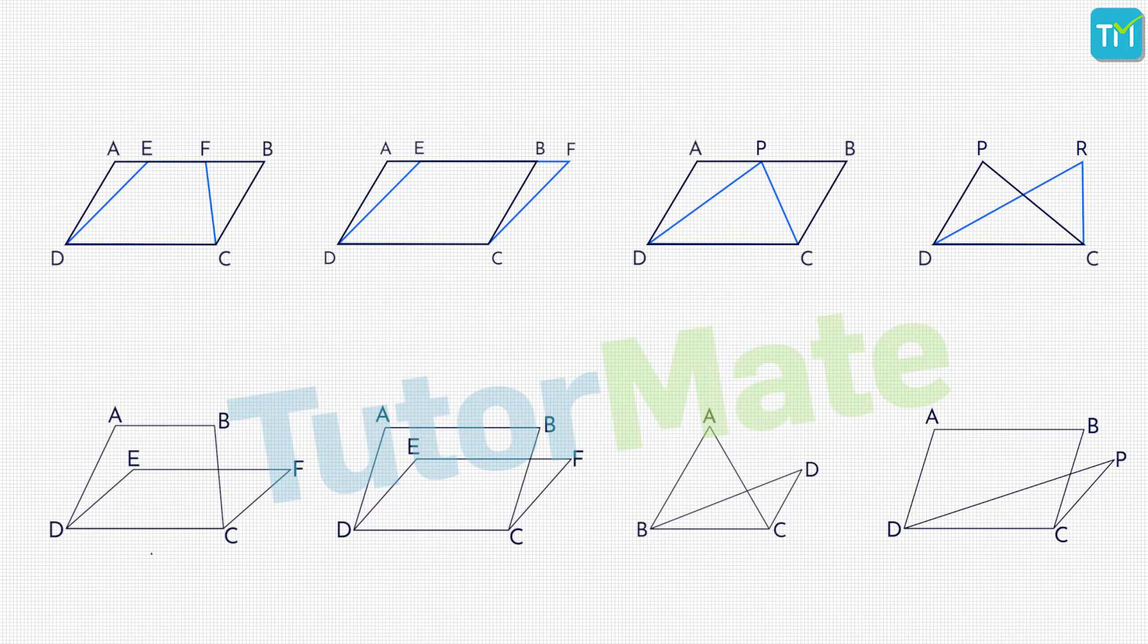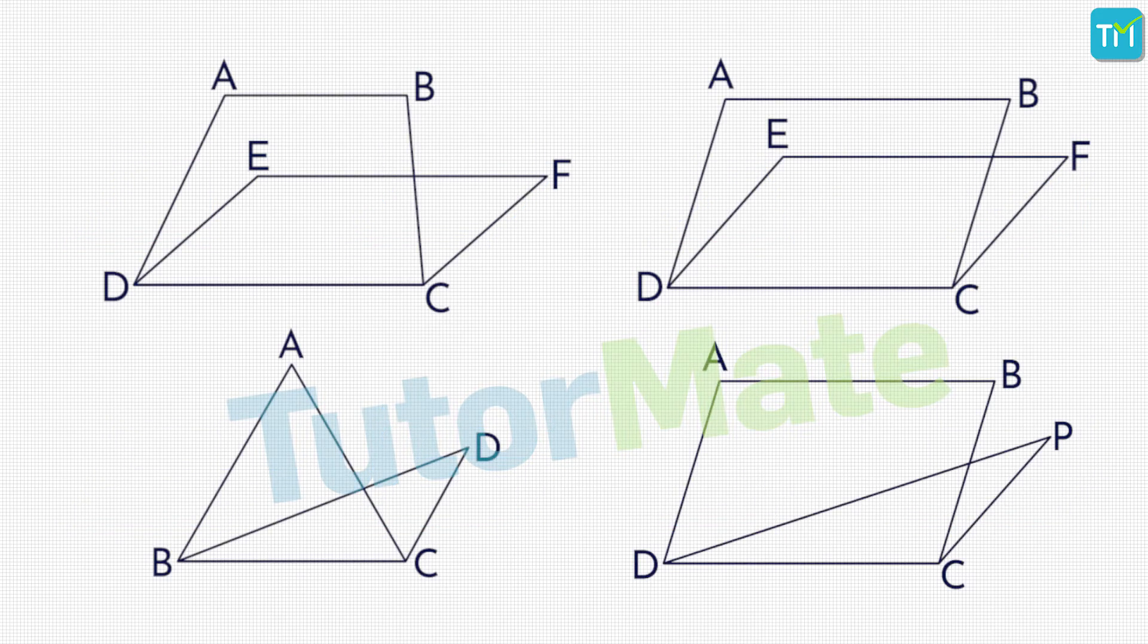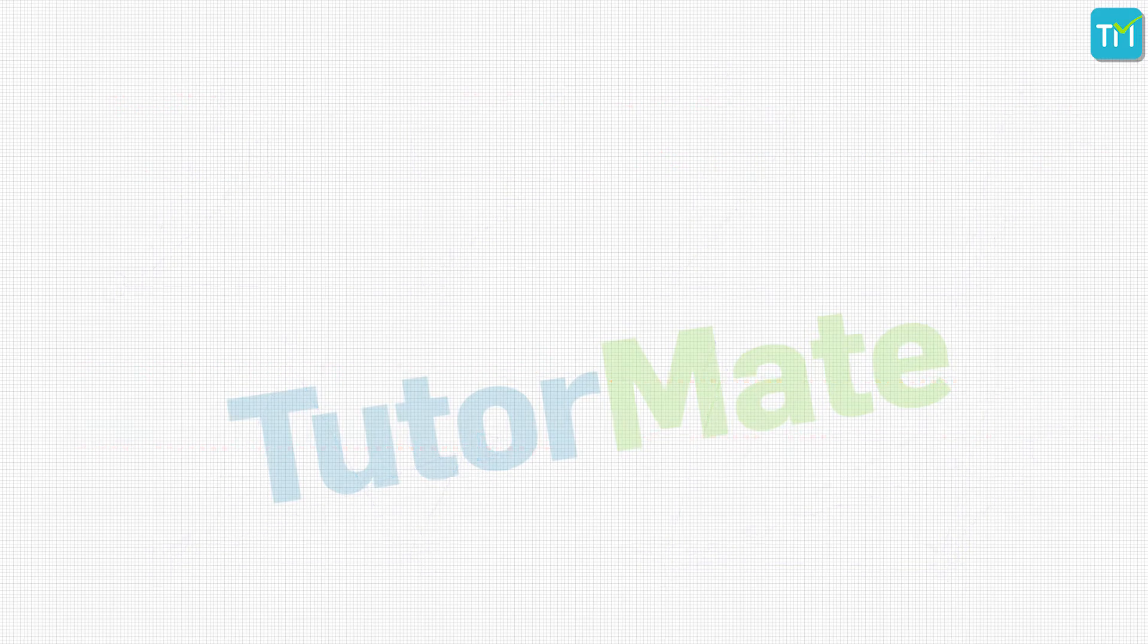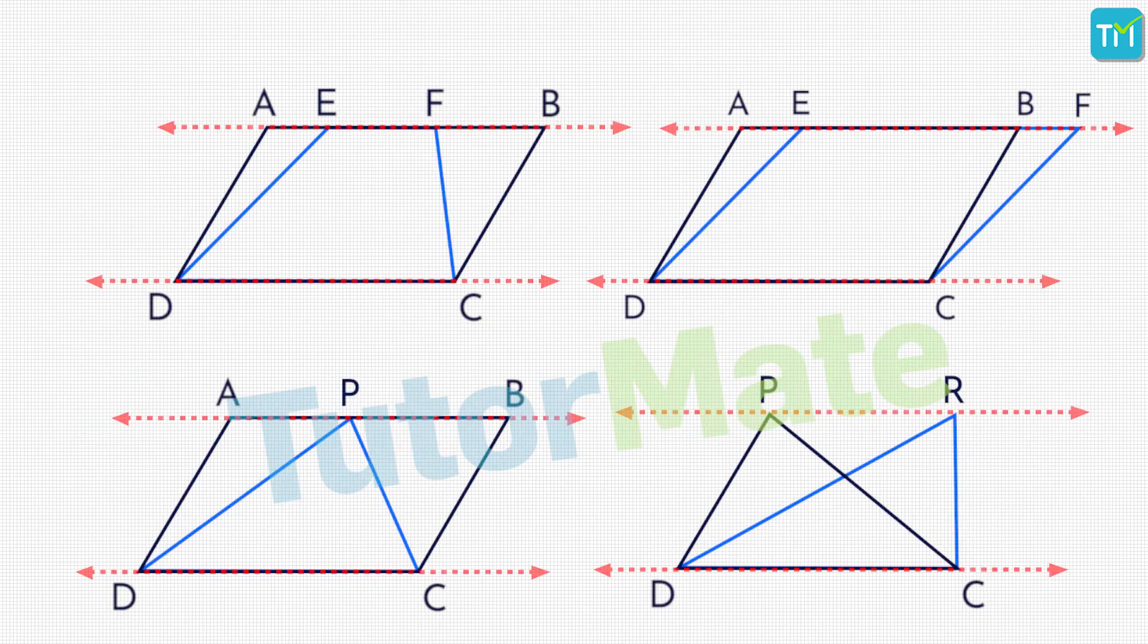Well, in both the cases, the figures shared a common base and two common vertices. Now in the first set of figures, the non-common vertices did not lie on the same line. However, in the second set of figures, the non-common vertices lay on the same line and this line was also parallel to the common base.